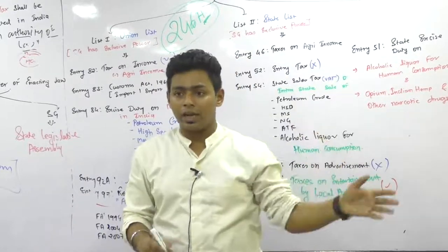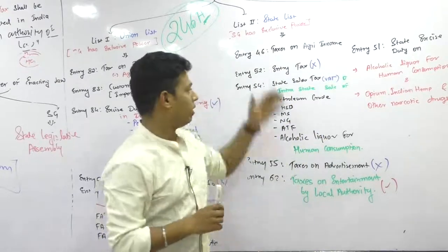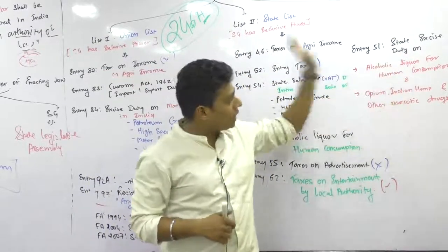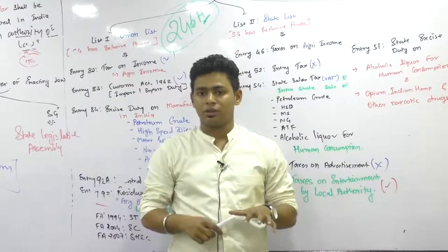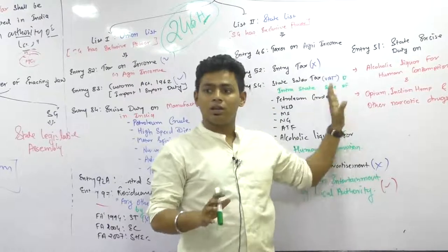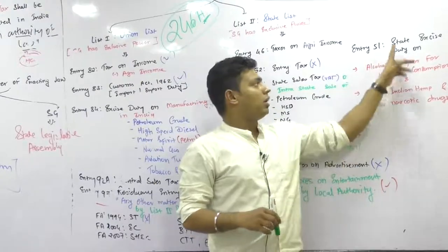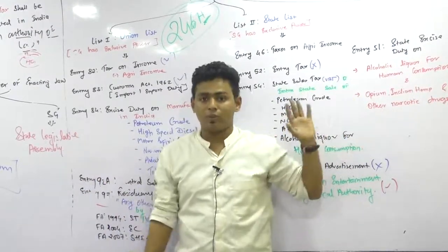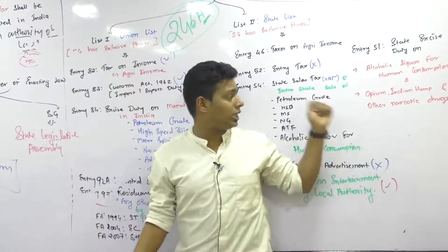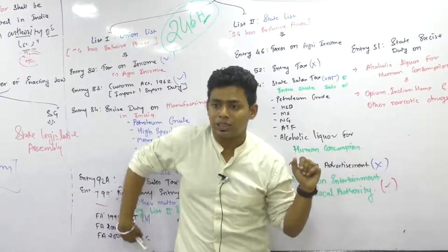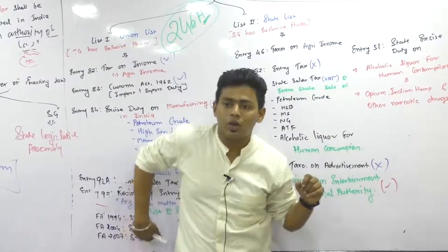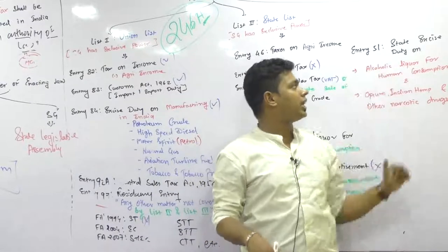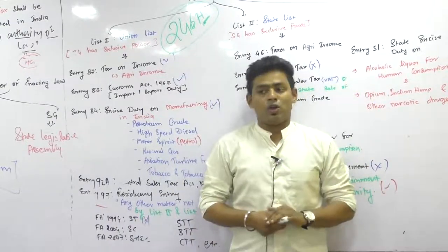There is one entry I missed while discussing the Constitution - Entry 51, which is still there even after the launch of GST. Entry 51 is on state excise duty. So there are two types of excise duties: central excise and state excise. We also had central sales tax and state sales tax. State sales tax covered intrastate and CST covered interstate. These are older laws. Entry 51 covers state excise duty on alcoholic liquor for human consumption.